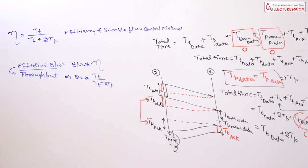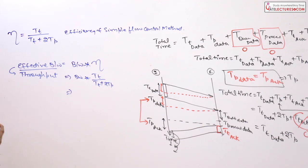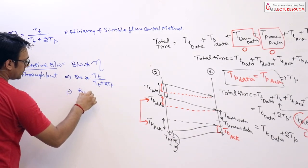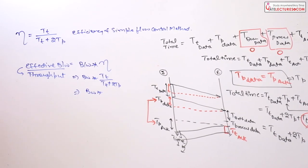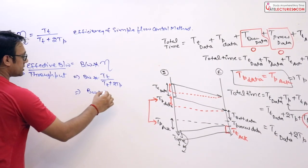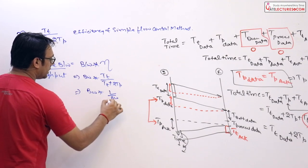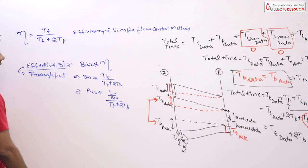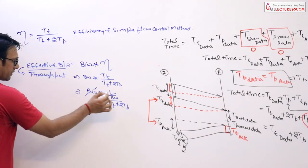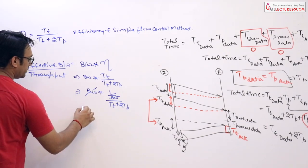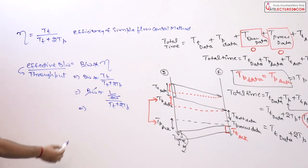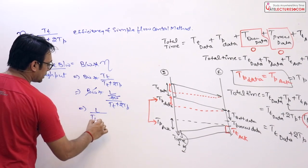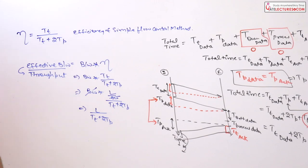If you work through this formula, bandwidth multiplied by tt over (tt + 2·tp), and substitute that transmission time (tt) equals length of data packet divided by bandwidth, you can cancel out the bandwidth terms. The result is: throughput equals length of data packet divided by (tt + 2·tp). This is another formula to find the throughput of the network.